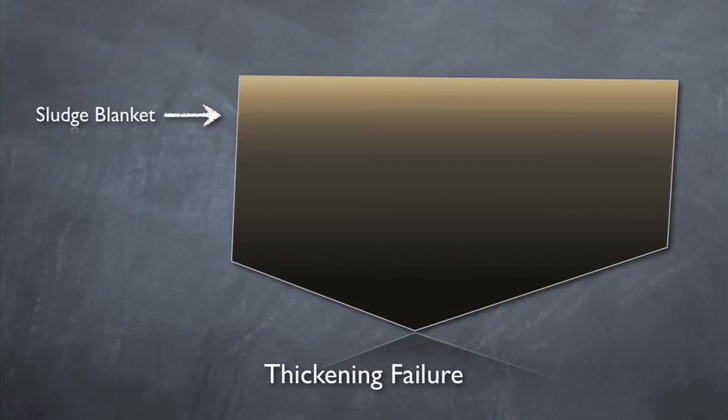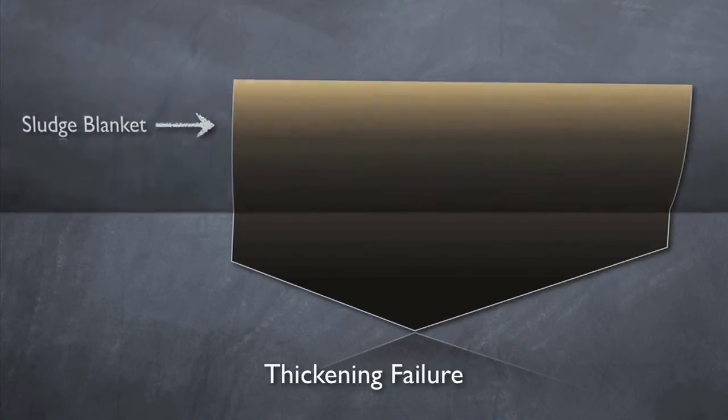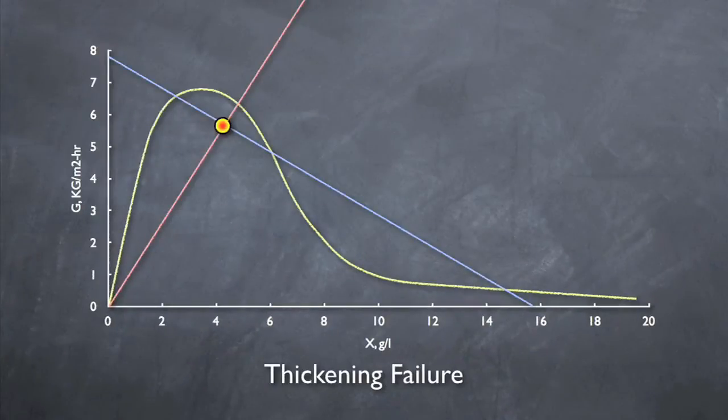Thickening failure, like clarification failure, can be caused by high flows, low RAS, high SVI, or any combination. So if either of these scenarios should occur, and you were to fail in thickening or clarification, there is some good news. The system will eventually fix itself.